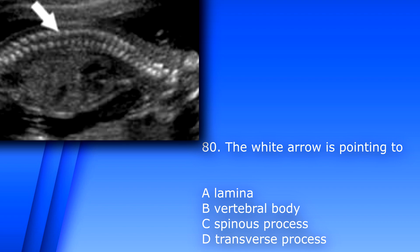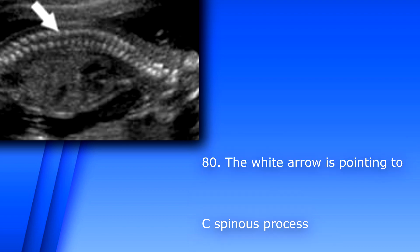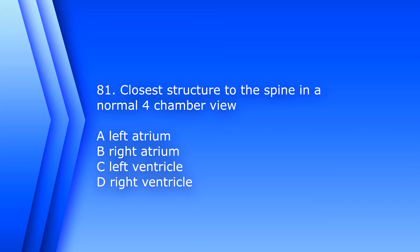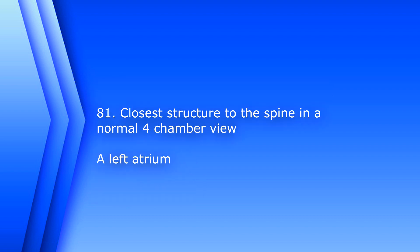Question 81. The closest structure to the spine in a normal four-chamber view? A. Left atrium. B. Right atrium. C. Left ventricle. D. Right ventricle. The answer is A, left atrium.